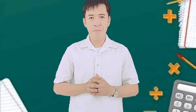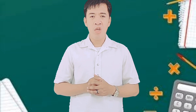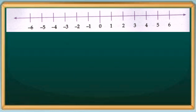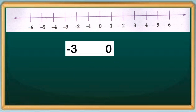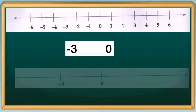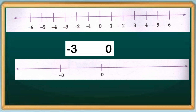Let's try to compare the following integers using the number line. Example: let's compare negative three and zero. Based on the number line, negative three is on the left side of zero. Therefore, negative three is less than zero. So our answer is less than.